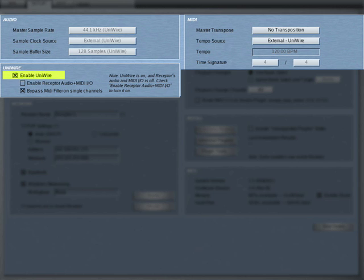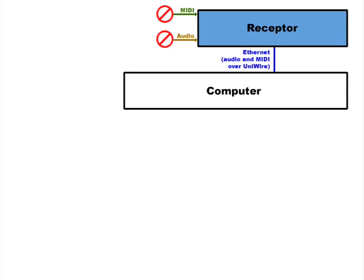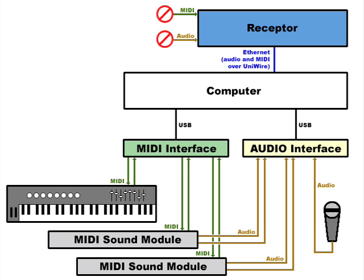Once you've enabled UniWire, there are two additional options available. The first one is called Enable Receptor Audio and MIDI IO. When this parameter is unchecked, like it is here, then Receptor will ignore its own physical audio and MIDI ports. In this mode, your host computer is in complete control of Receptor. You use the audio and MIDI interfaces connected to your computer, and all audio and MIDI communications between your computer and Receptor are transferred over the Ethernet cable. This essentially makes Receptor's plug-ins and its CPU an extension of your host computer. This mode is the ideal choice for composers and producers who route all MIDI and audio into their host computer's interfaces and who wish to keep their computer as the center of their musical world.